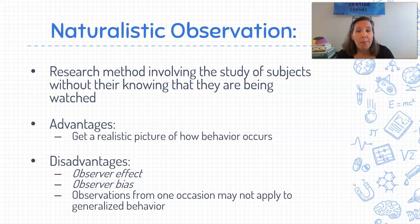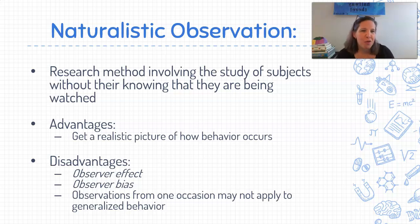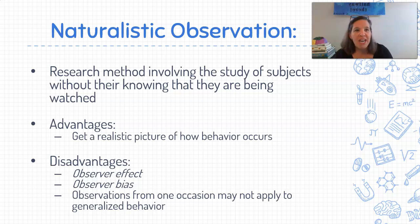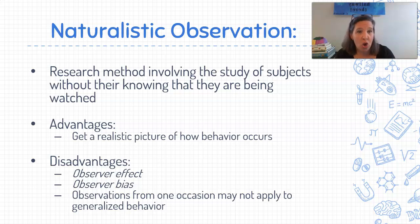There are a couple of disadvantages, though. One disadvantage is the observer effect. This is when an animal or a human discovers that they're being observed, and this is going to happen more often with humans. Now we know we're being observed, so we want to do it right — we want the observer to think that we're good. So we might change our behavior and do what we think they want us to do. That's not real; it's not natural. That is a behavior that is being altered. So that's the observer effect.